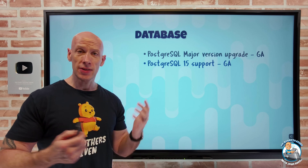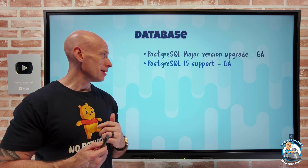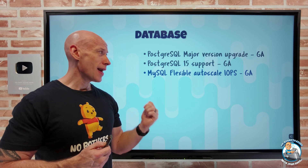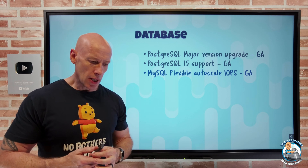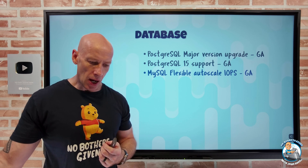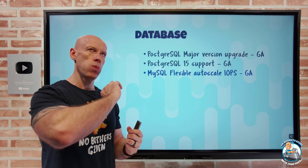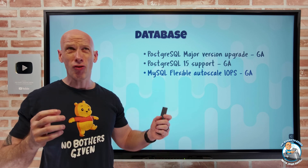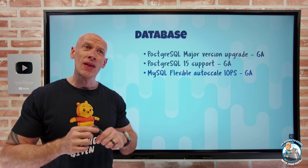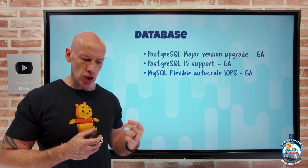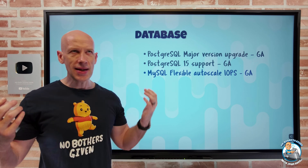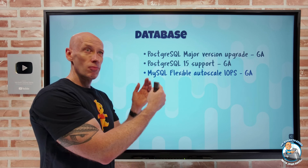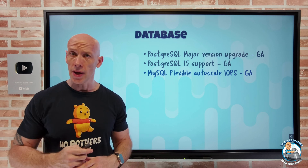It also now supports PostgreSQL 15 in GA. And then MySQL Flexible now has auto-scale IOPS. This gives me IOPS on demand — I don't have to think about the maximum I'm going to need, pre-provision it, and pay for it even when I'm not using all of it. Instead, I'll only pay for the amount I actually need, avoiding unnecessary provisioning and expense for potentially long periods of underutilisation.